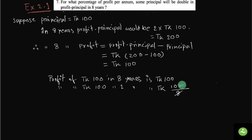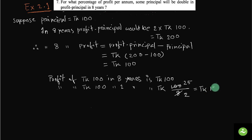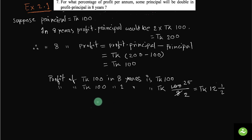Simplifying 100 divided by 8: 25 over 2, which gives Taka 12 and a half. So we can say the percentage of profit is 12.5%.